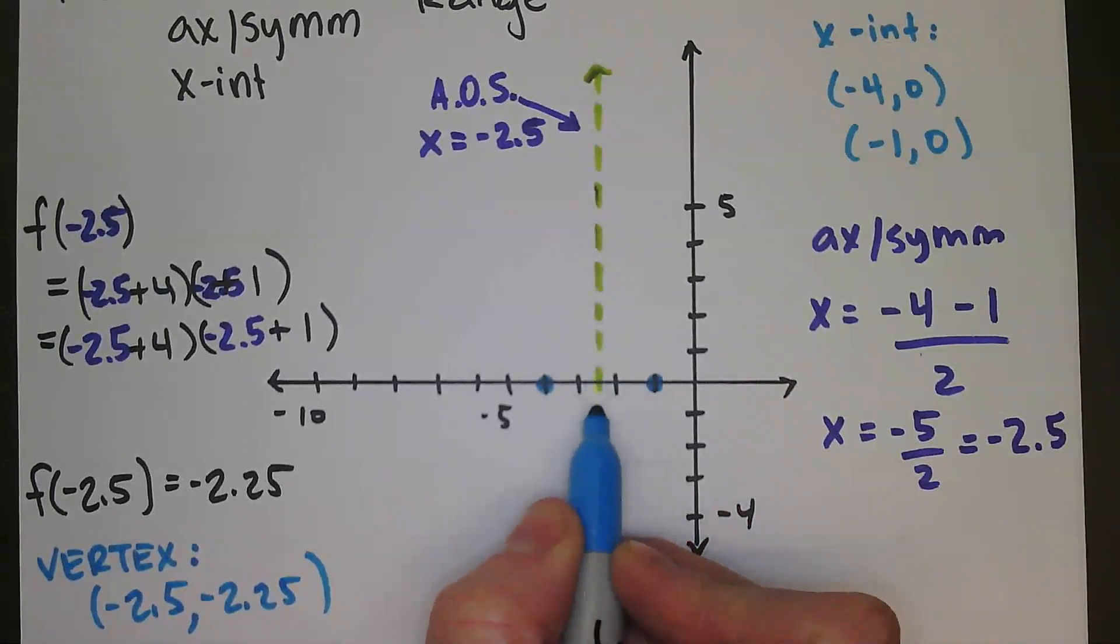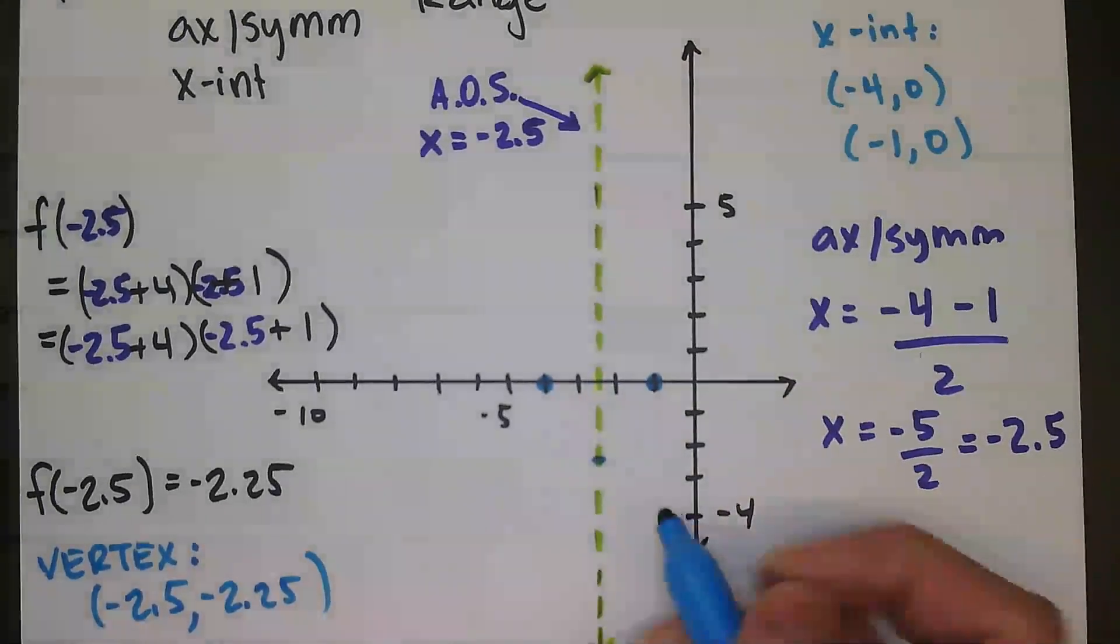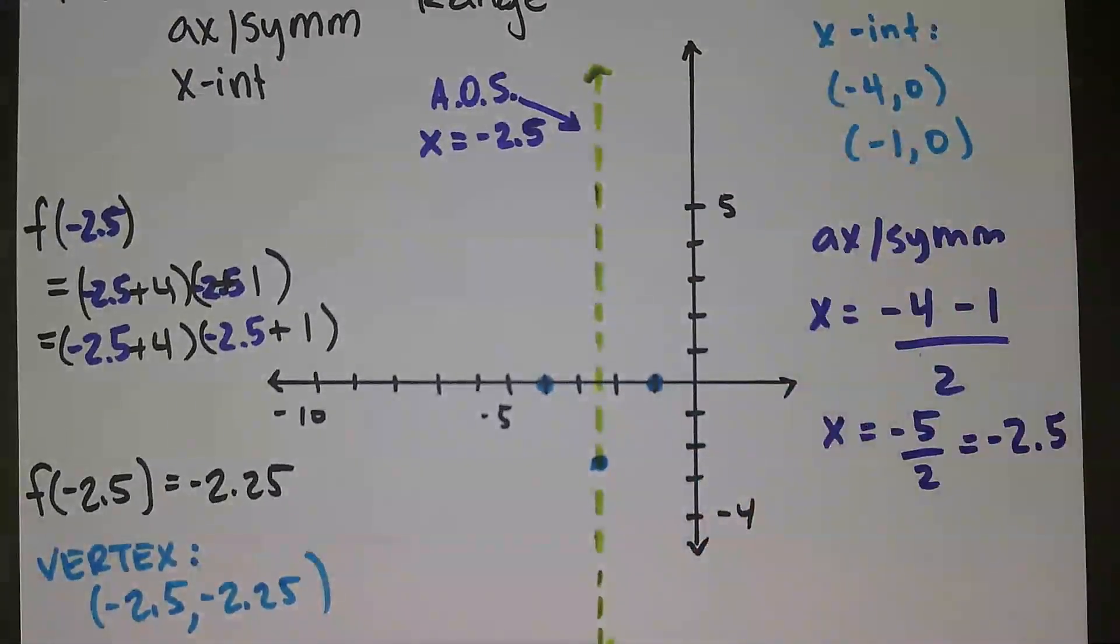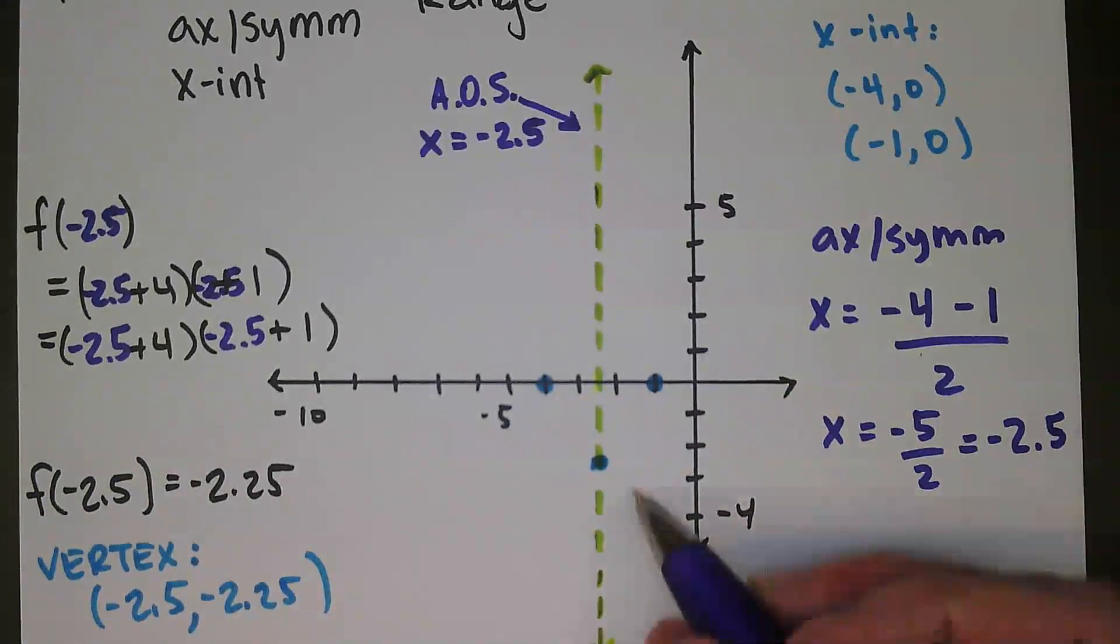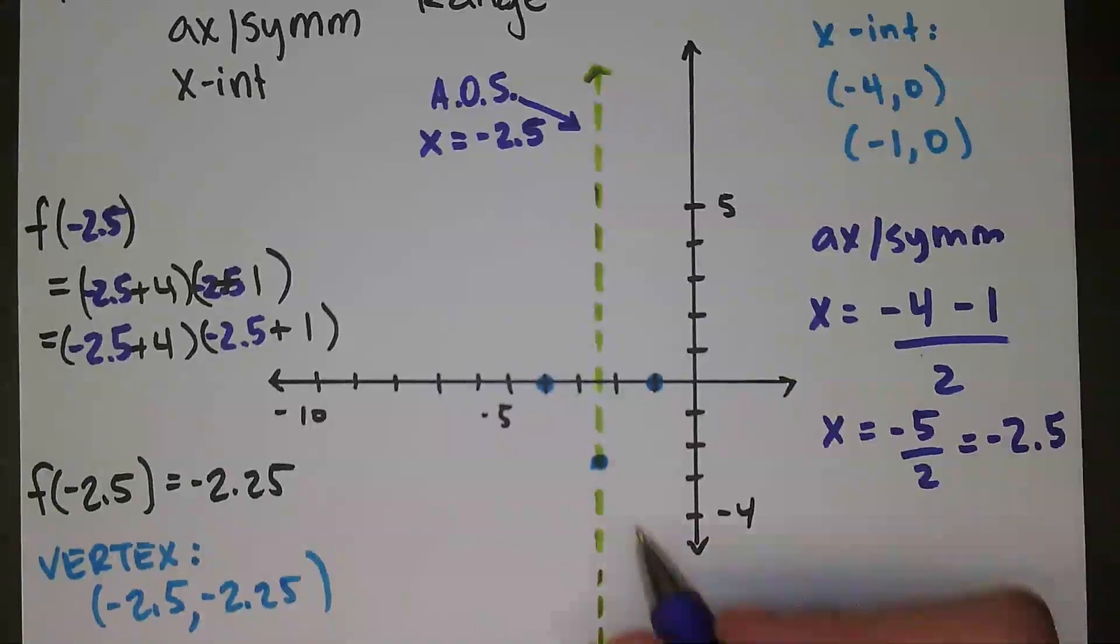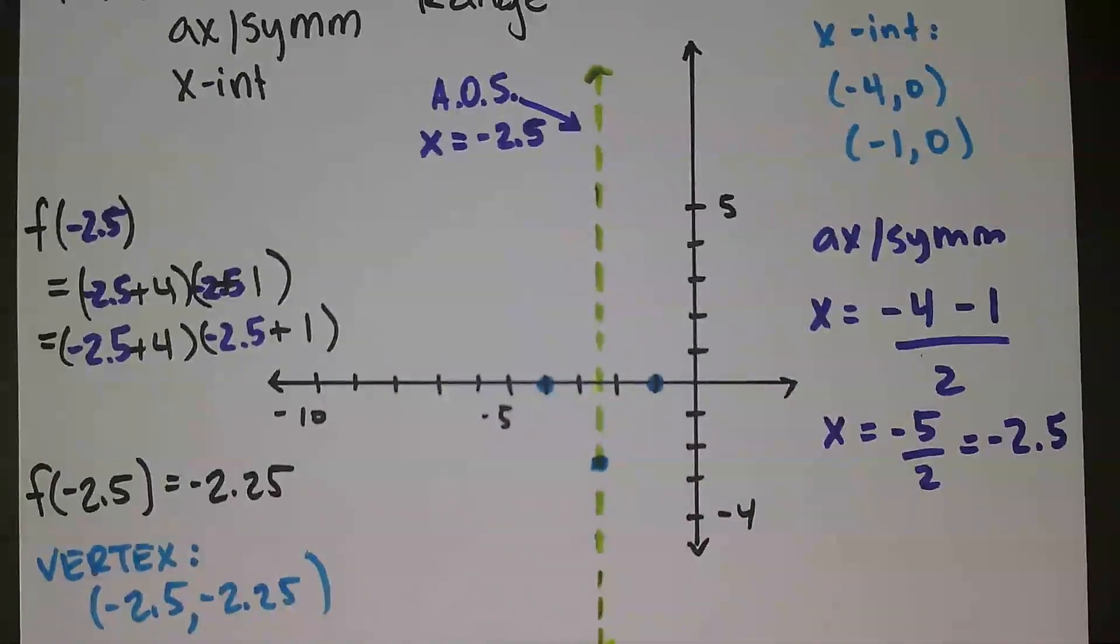We're on the axis of symmetry, down 1, down 2, and then a little bit more of a quarter from there. Our a value is 1. So actually graphing this using the a value, it's not too bad. The issue is that we're not on whole numbers. We're down to a quarter.